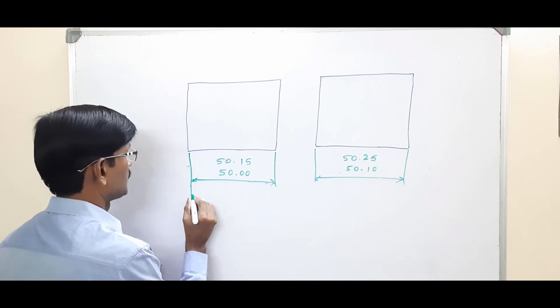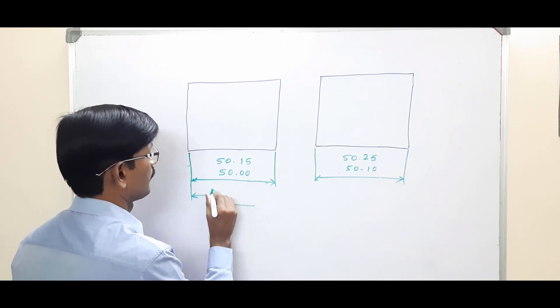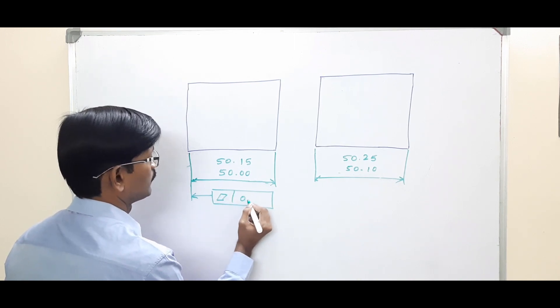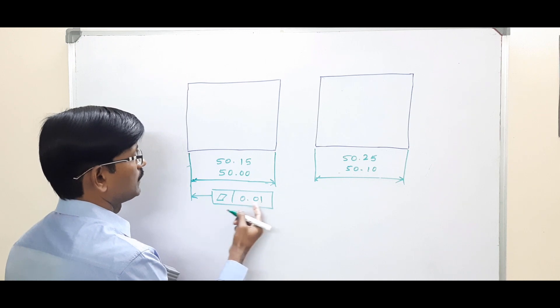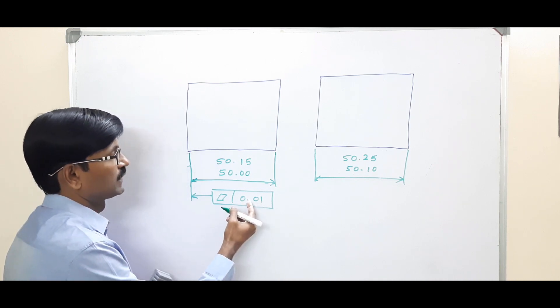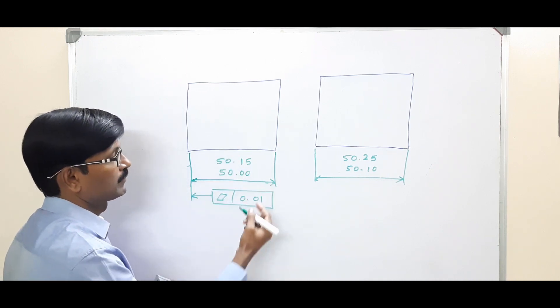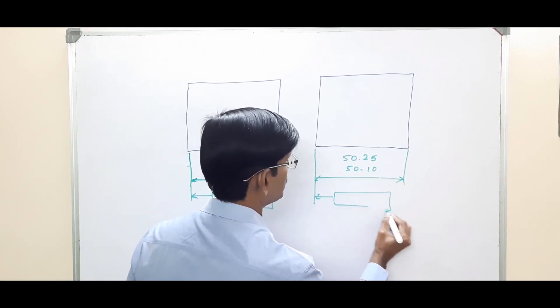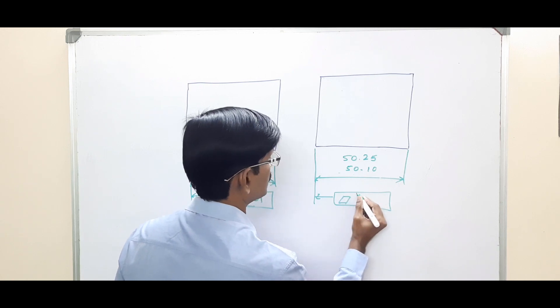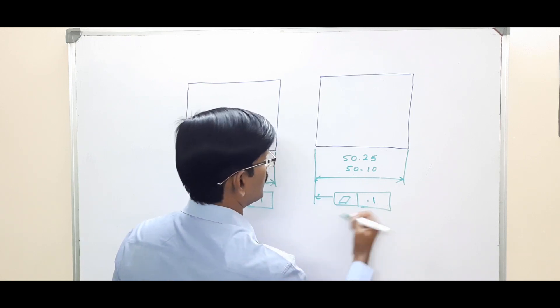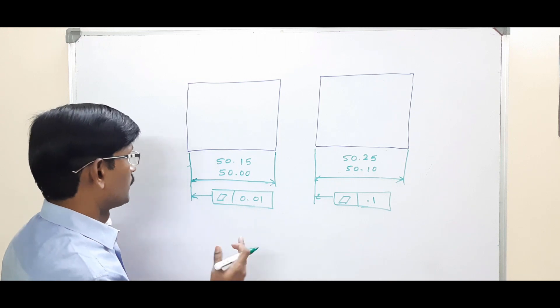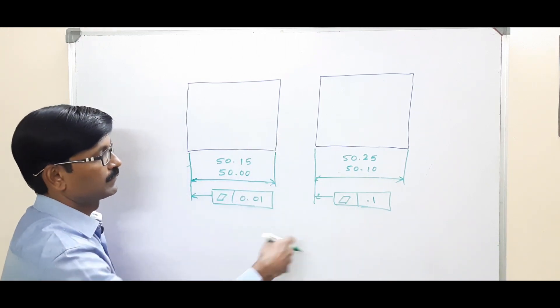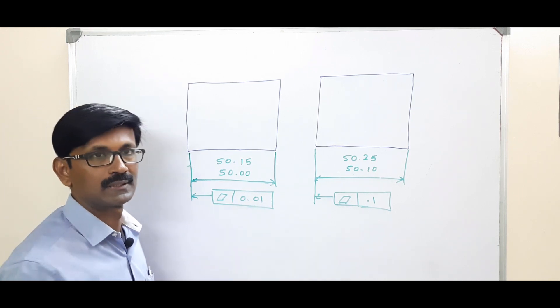So for ease of understanding, I just put it on this side: flatness. Here the geometrical tolerance is having a zero before the decimal point, so this will become a metric system. Whereas in this case, if I put it like this, then it is inch basis system. Note: the feature control frame should be on this side here. Due to space restriction, I am showing it on this side.